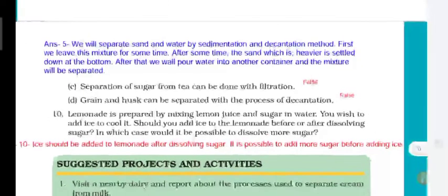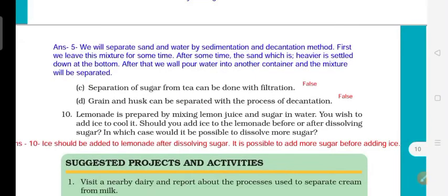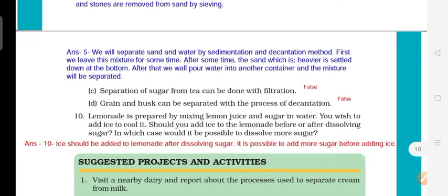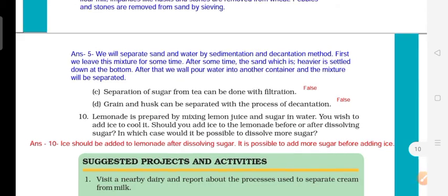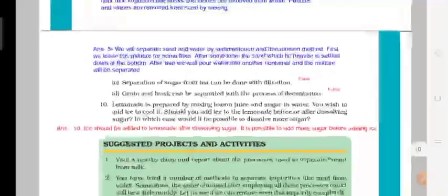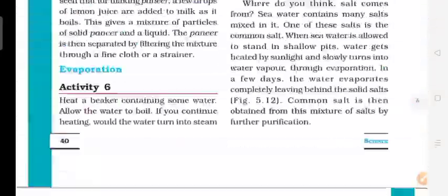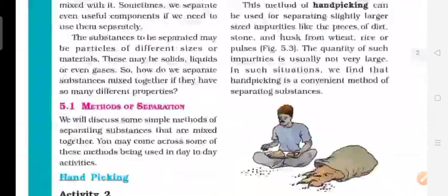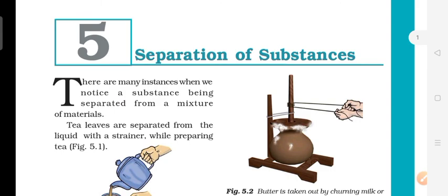Next: Grain and husk can be separated by the process of decantation — False, that doesn't happen. Next question about lemonade: when making lemon juice, you add ice to cool it. It is possible to add more sugar before adding ice. So these were the exercise solutions of chapter number 5, Separation of Substances. Thank you for watching — make sure to like, share, comment, and subscribe to the channel.